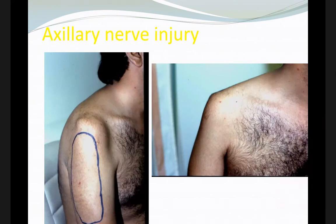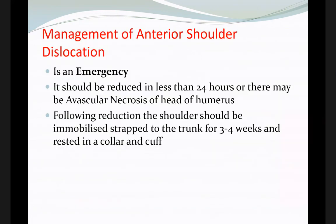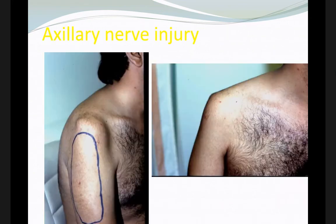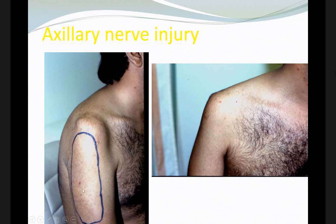The axillary nerve supplies sensation to the lateral aspect of the shoulder. It is very important to examine the lateral edge of the shoulder to assess for loss of sensation. If sensation is lost in this area, the axillary nerve is affected.